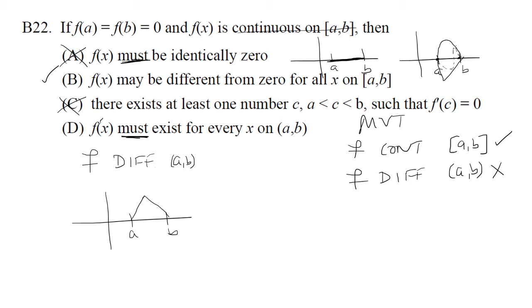What if this is an absolute value and here you get a corner? We know that f of a equals f of b equals zero and it is continuous on the closed interval, but it's definitely not differentiable. So this is an example where it wouldn't work.